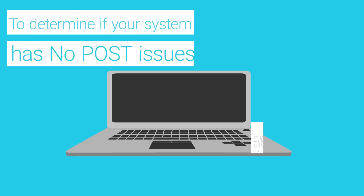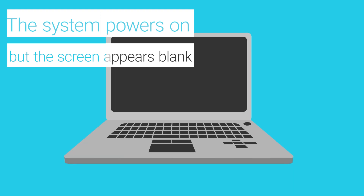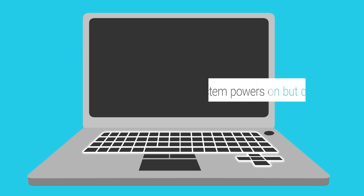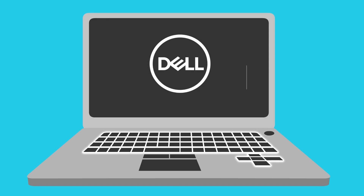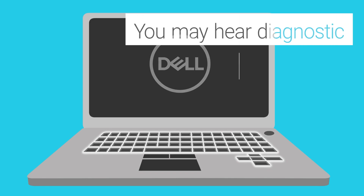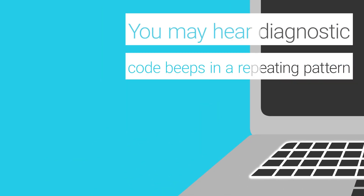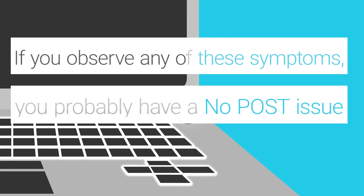To determine if your system has no post issues, keep an eye out for these clues. The system powers on but the screen appears blank. The system powers on but does not progress past the Dell logo screen. The hard drive activity light isn't flickering, or it may be steadily blinking or maintaining a steady constant color. You may hear diagnostic code beeps in a repeating pattern. The power button may be flashing in a repeating pattern. If you observe any of these symptoms, chances are your PC is experiencing no post.